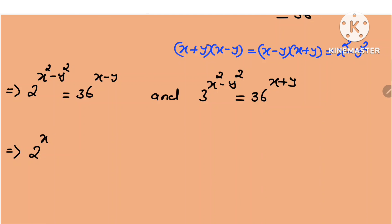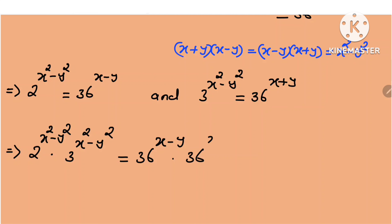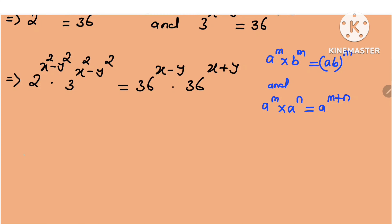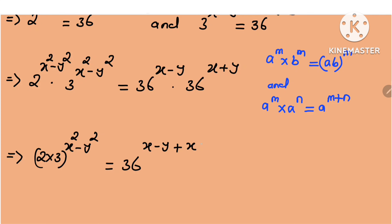Multiplying these two equations together, we obtain 2 raised to the power x squared minus y squared times 3 raised to the power x squared minus y squared, equal to 36 raised to the power x minus y multiplied by 36 raised to the power x plus y. Recalling that a raised to the power m times b raised to the power m equals (ab) raised to the power m, and a raised to the power m times a raised to the power n equals a raised to the power m plus n, this implies (2 times 3) raised to the power x squared minus y squared equals 36 raised to the power (x minus y) plus (x plus y).